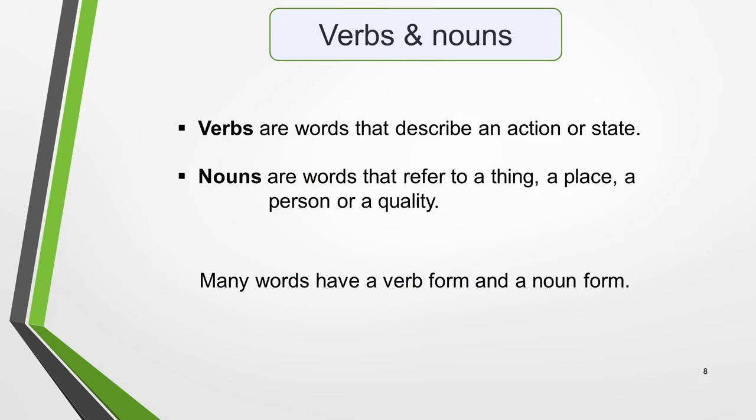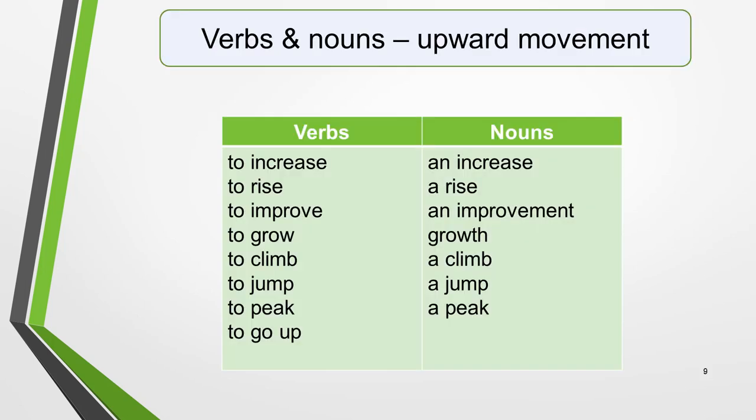You'll also need some specific verbs and nouns. Verbs are words that describe an action or state, while nouns refer to a thing, a place, a person or a quality. Many words have a verb form and a noun form. You should learn two or three words for upward movement and two or three for downward movement. Here are some examples for upward movement — the verbs: to increase, to rise, to improve, to grow, to climb, to jump, to peak, and to go up.